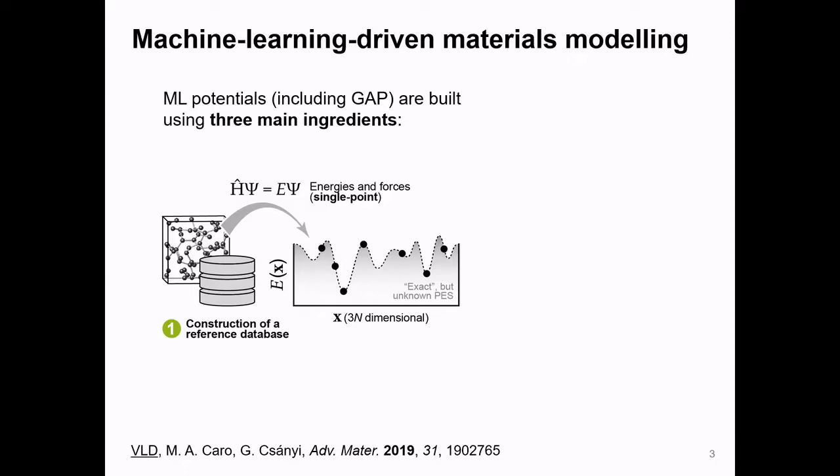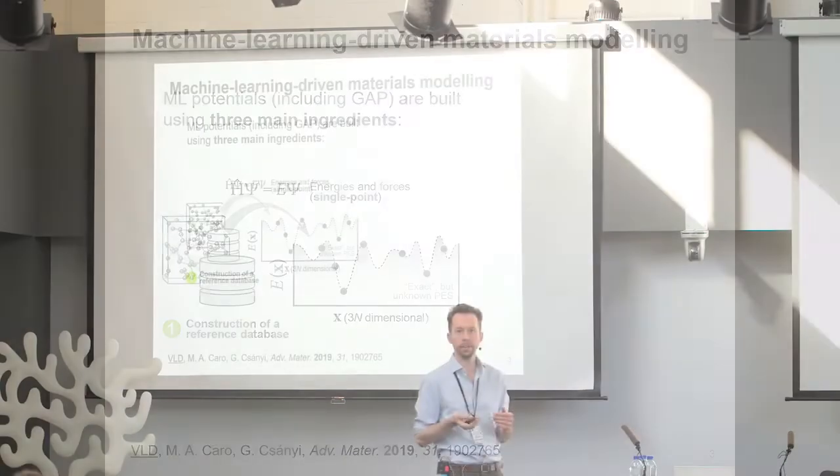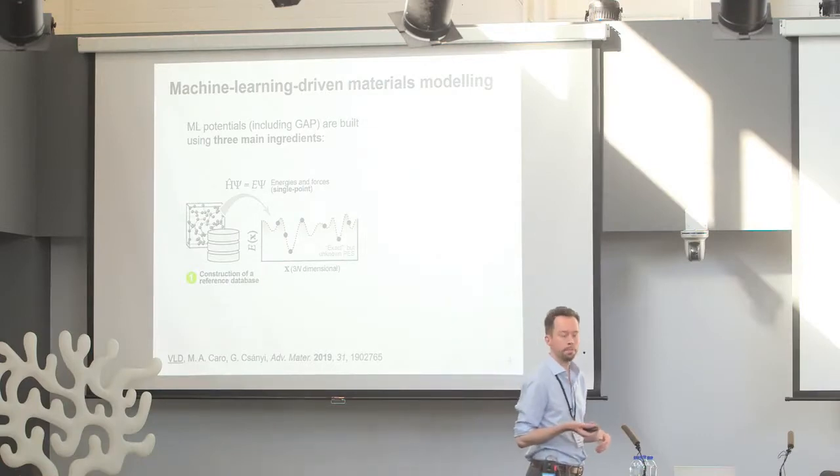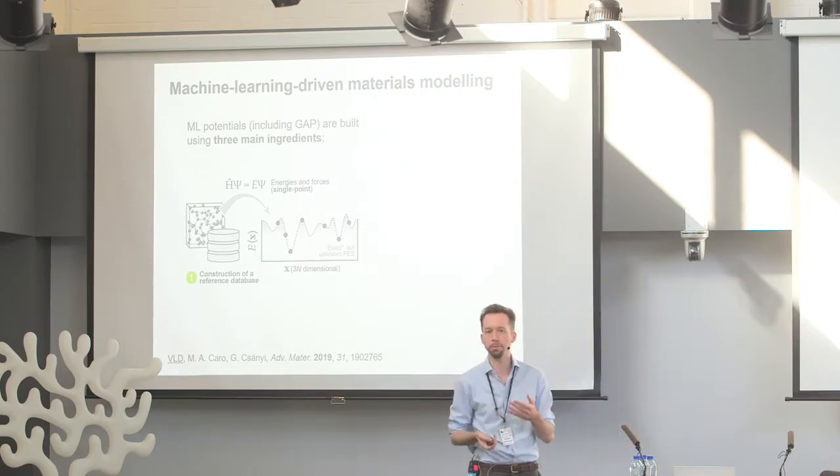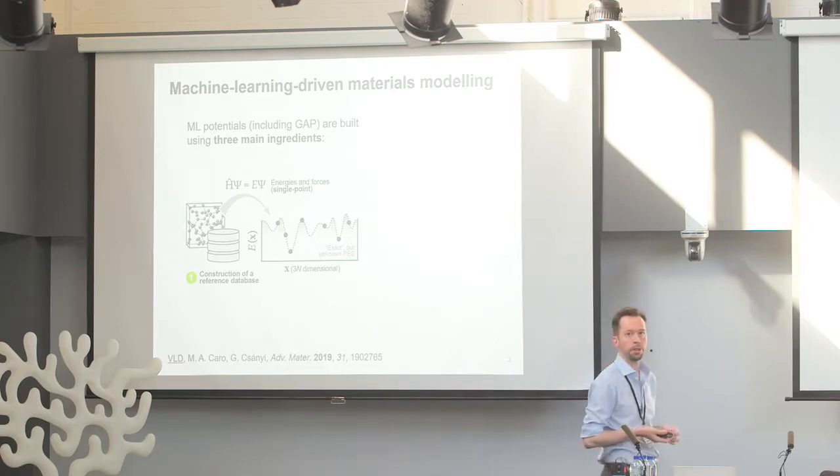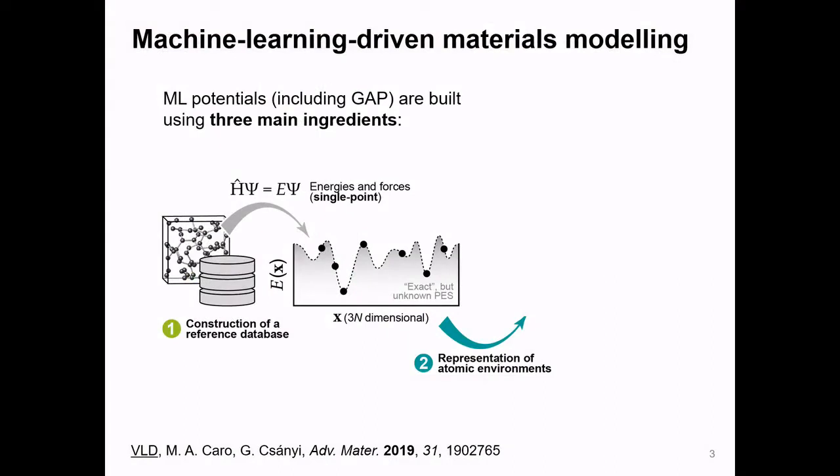And as machine learning methods are based on learning from large data, the first ingredient really is a good set of data. And it's absolutely crucial to select the right types of data points that you put into your fit. And indeed, our group in Oxford is mainly focused on that side of the problem, developing approaches for building efficient databases from which we can learn. Once you've got your data, you need a mathematical representation of the atomic structure, because we've heard about SOAP by Albert and Gabor. And then you need, as the third part, the regression itself. So that's the task to actually learn from those data and to build your machine-learned model.